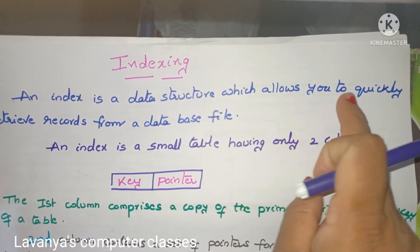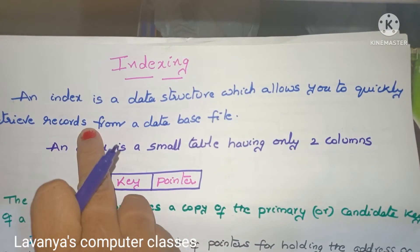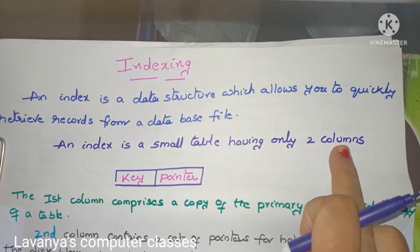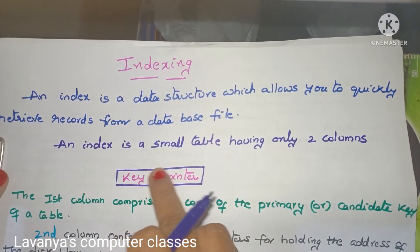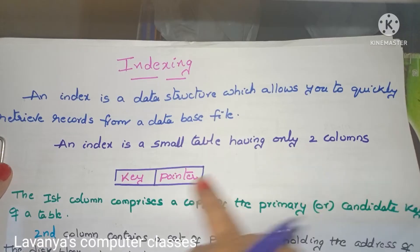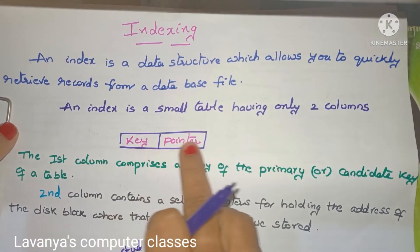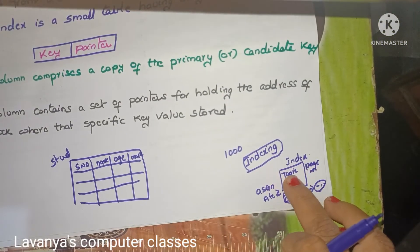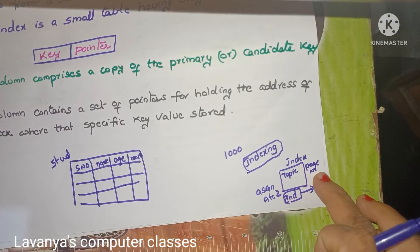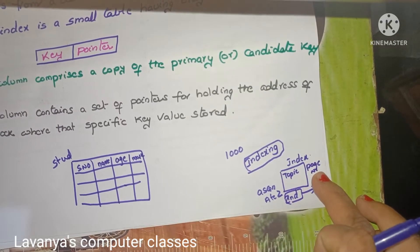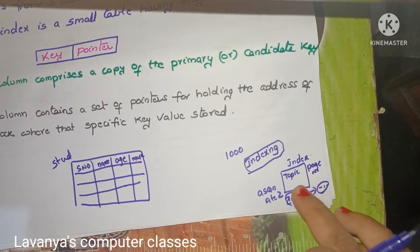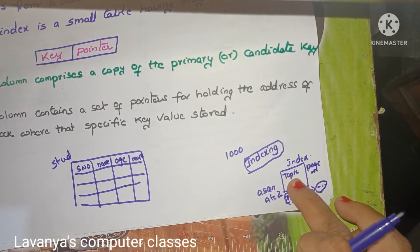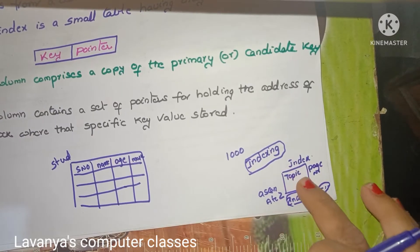Index is a data structure which allows you to quickly retrieve records from a database file. An index is a small table having only two columns. The first column is the key and the second one is the pointer. Similarly, in the textbook example, one is the topic name and the second one is the page number. The page number is the pointer — it gives direction to where the particular topic is available.